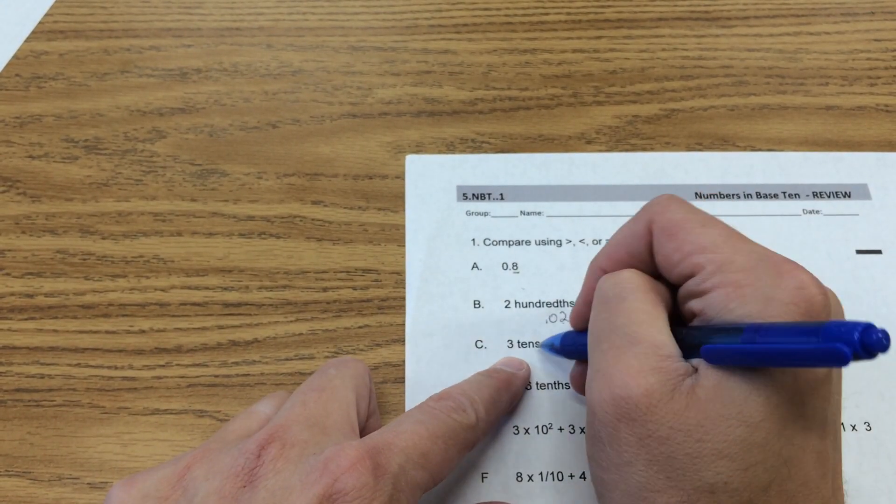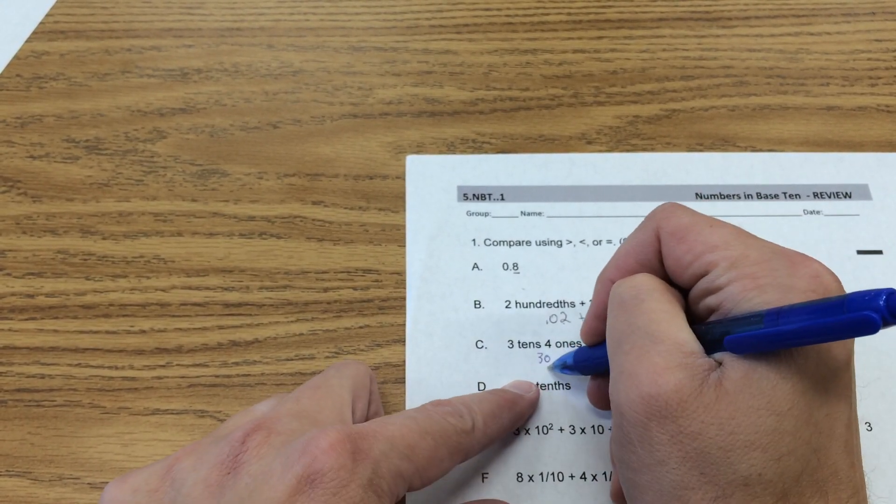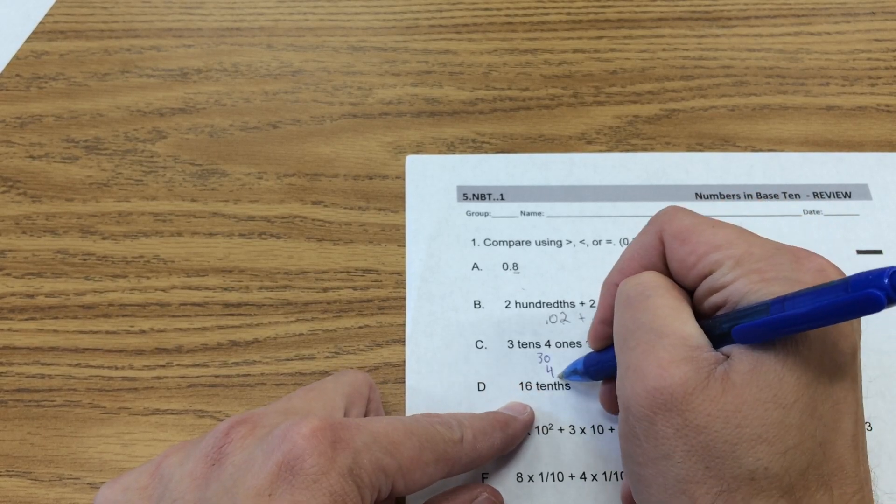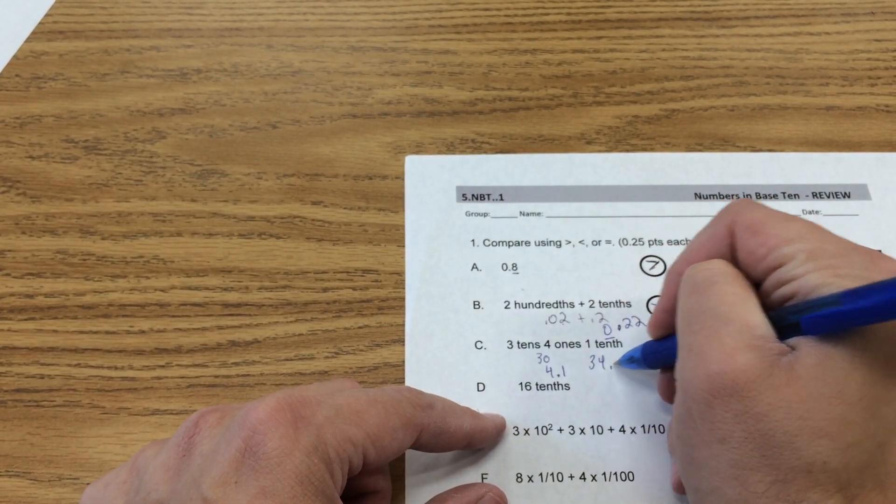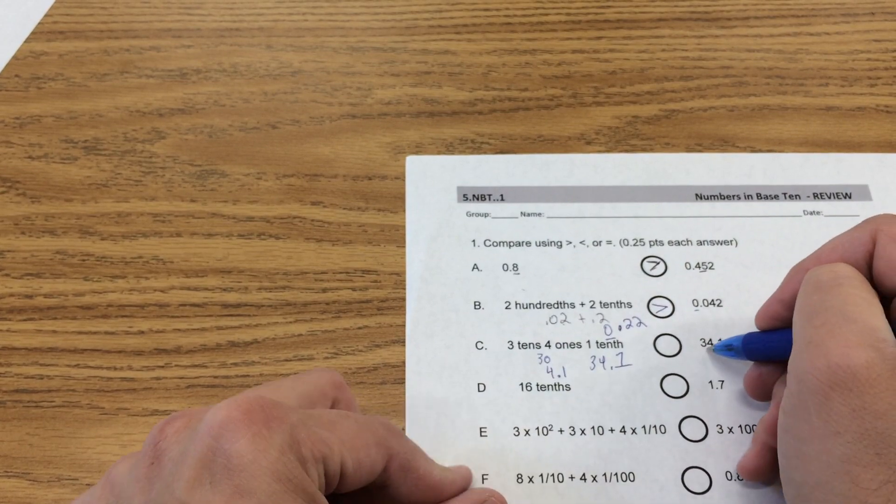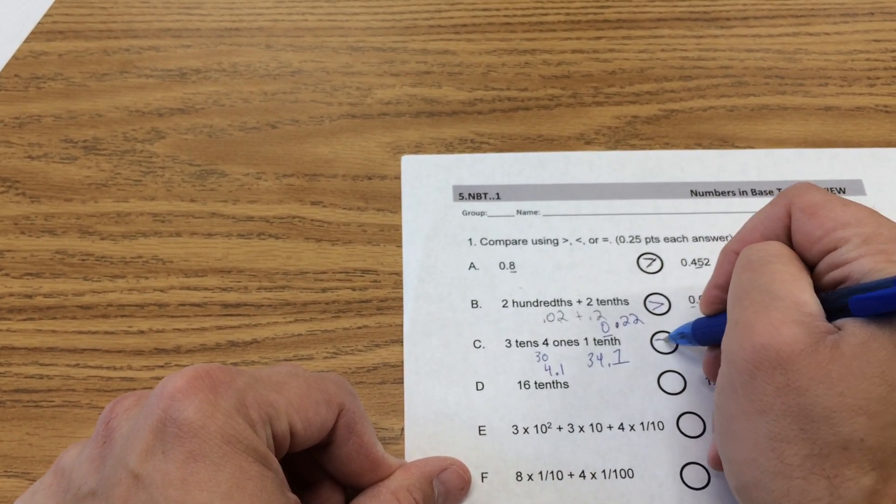Okay. 3 tens, that's 30. 4 ones, that's just 4. 1 tenth, that's 1 tenth. So 34 and 1 tenth, and comparing it with 34 and 1 tenth. They're equal.